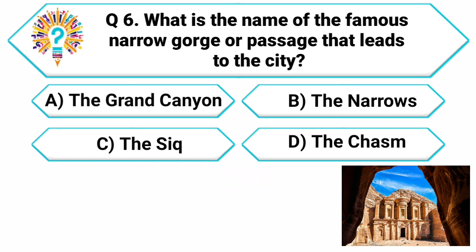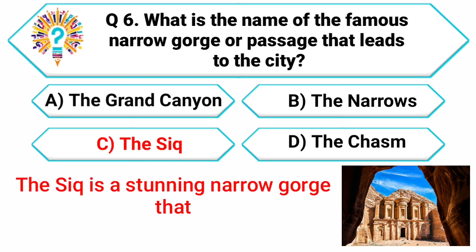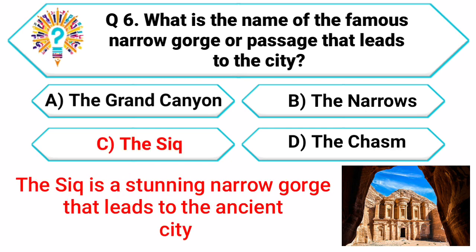Correct answer: C. The Siq. The Siq is a stunning narrow gorge that leads to the ancient city of Petra. Well done. Let's keep the momentum going.